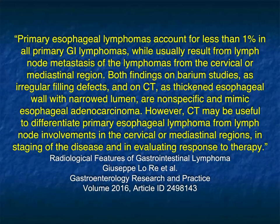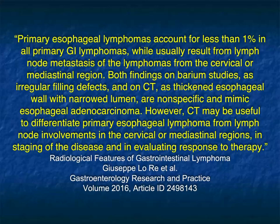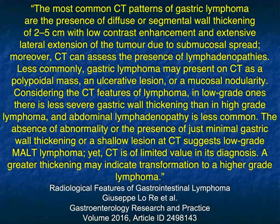When I talk about GI tract lymphoma, I typically talk about stomach, small bowel, and colon, with my big emphasis being on small bowel — that's probably where we see the most cases. It should be noted that primary esophageal lymphomas are uncommon; they usually result from lymph node metastasis from the cervical and mediastinal region involving the esophagus secondarily. You're typically going to see other nodes in the neck or mediastinum. There is a challenge at times separating esophageal cancer from esophageal lymphoma, but with lymphoma the bulky adenopathy differs from esophageal cancer's typical tumor infiltration.